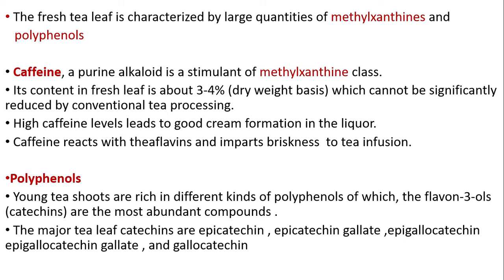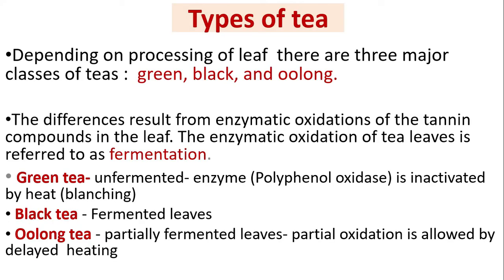Polyphenols: young tea shoots are rich in different kinds of polyphenols, of which the flavanols — known as catechins — are the most abundant compounds. The major tea leaf catechins are epicatechin, epicatechin gallate, epigallocatechin, epigallocatechin gallate, and gallocatechin.